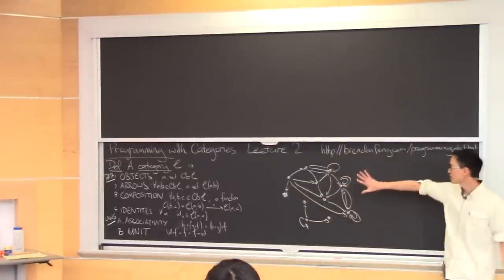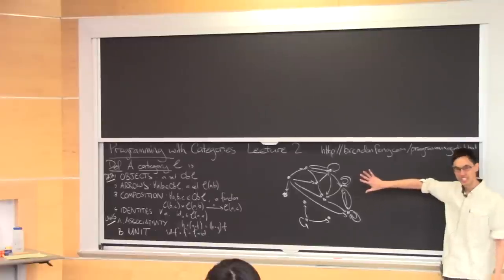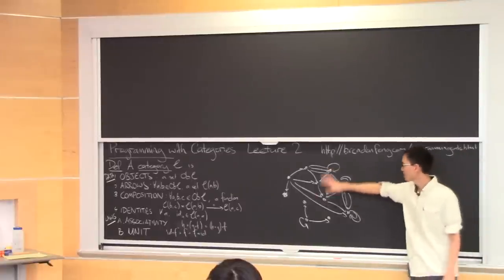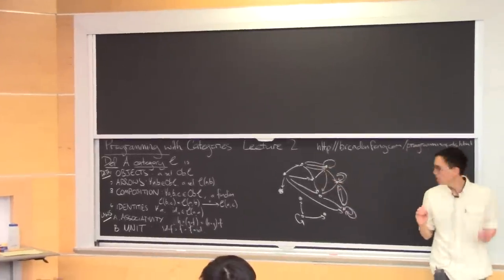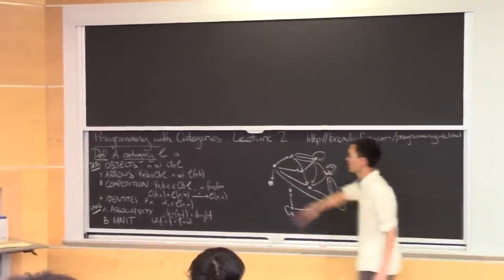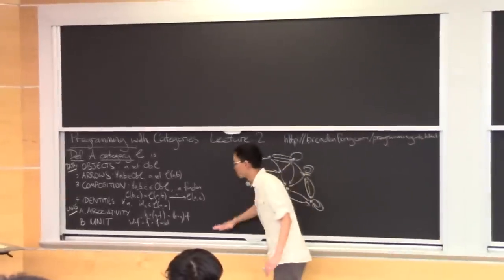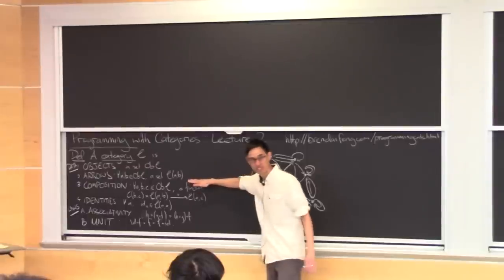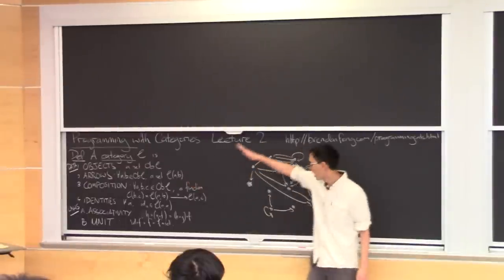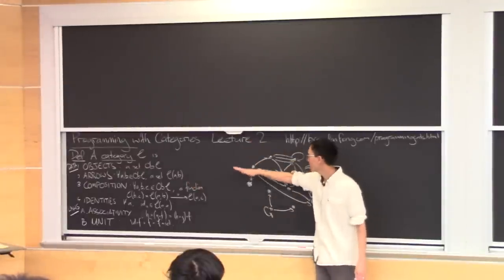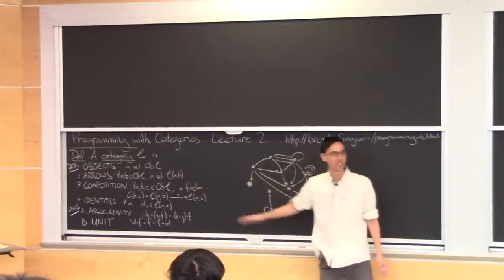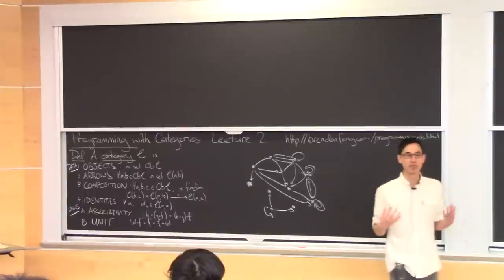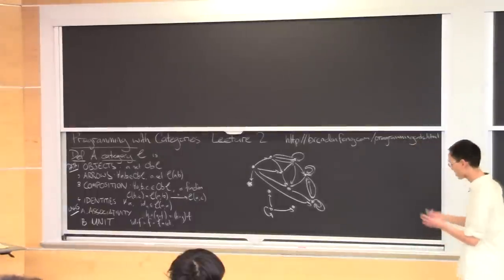What a category looks like is dots and arrows — a bunch of dots and a bunch of arrows. But a category also has some additional stuff. We didn't end the definition there. In particular, the additional stuff is about composition, because categories are about composition.